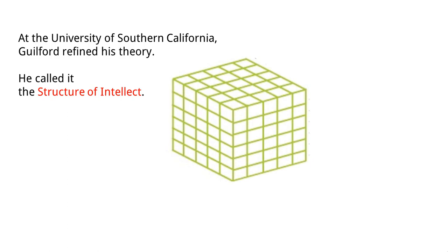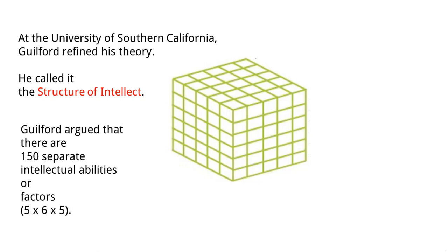It's usually represented by a cube, and it has a lot of columns and rows on each side — we're going to talk about this in a later video. Guilford argued that there are 150 separate intellectual abilities or different factors. As you can see, we have five across, six down, and another five over. So he believed that there were 150 separate intellectual abilities. The cube represents all of those different combinations of intelligence and intellectual abilities.